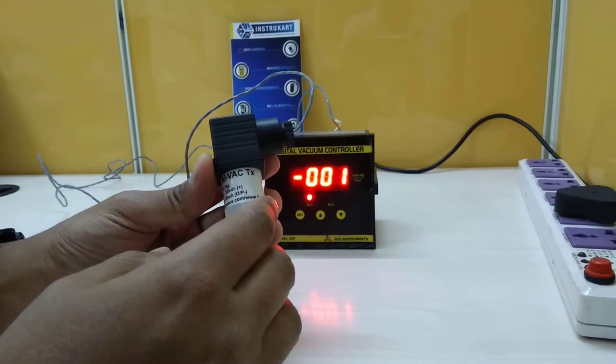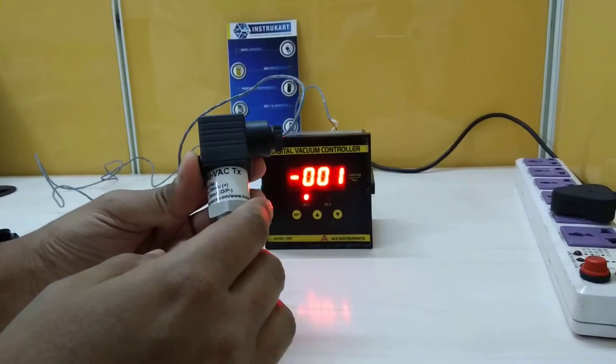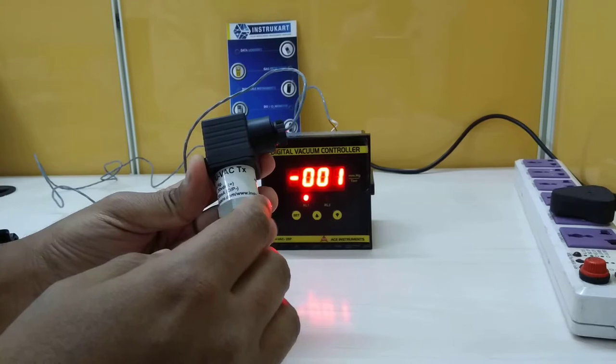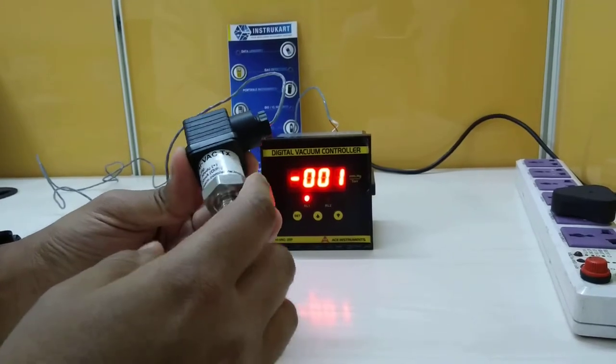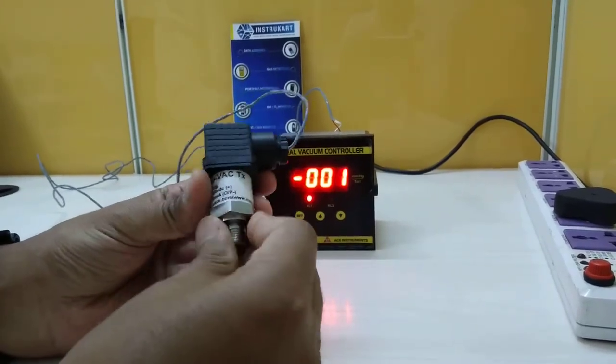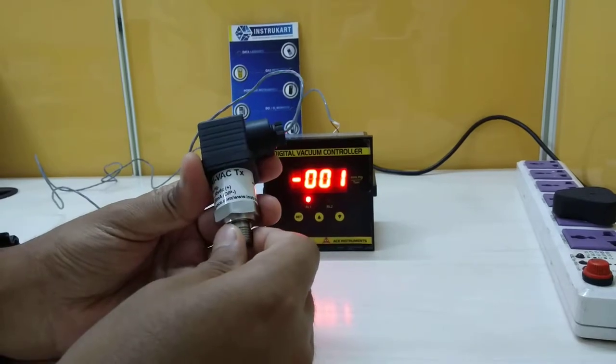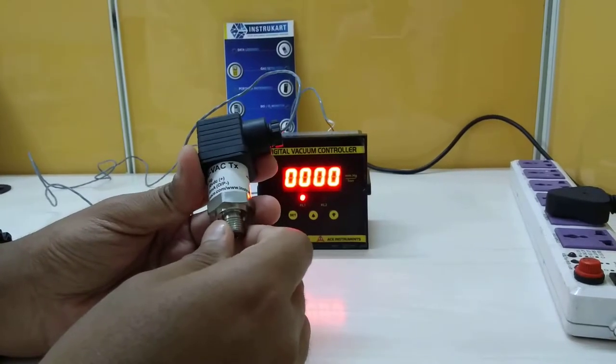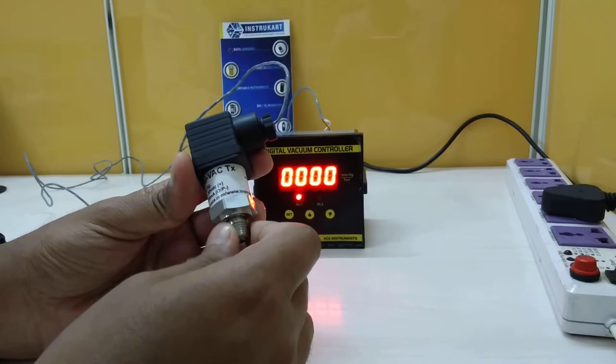The accuracy for this is plus or minus 0.5 percent on full scale. This is an SS wetted part body and the resolution for this would be 1 Tor or 1 mmHg.